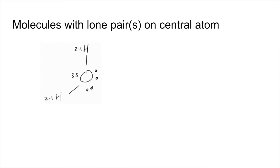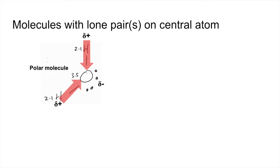The next type of non-diatomic molecule we'll look at are those with lone pairs. The first one is water. You can see the electronegativity values next to the atoms — we have two identical polar O-H bonds, with the dipole running toward the oxygen since it is more electronegative than hydrogen. The lone pairs cause the molecule to be asymmetrical, so these dipoles can't cancel out. Because of that, the hydrogens are slightly positive, the oxygen is slightly negative, and the overall molecule is polar.